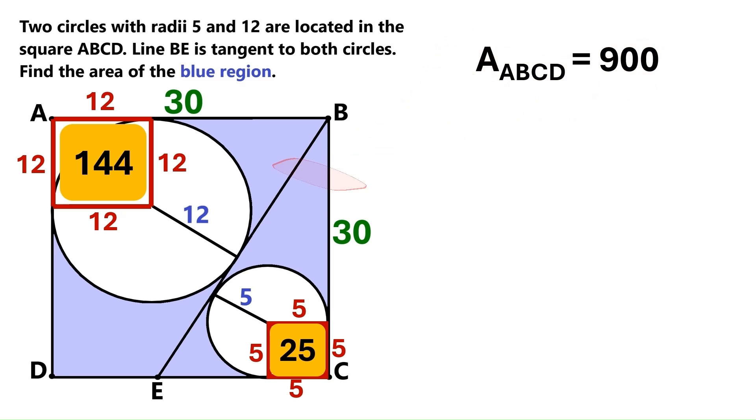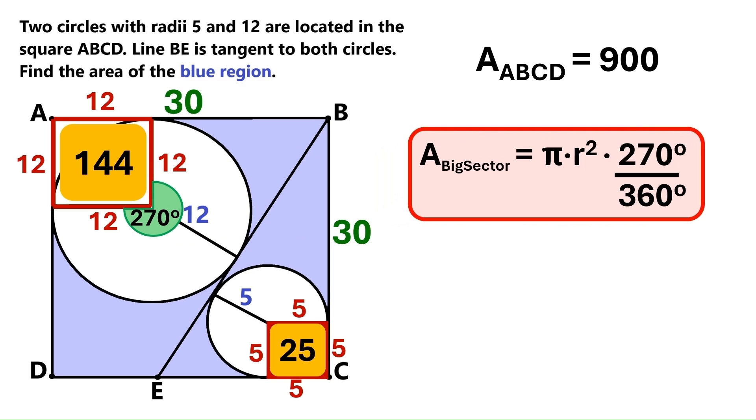Next, we need to find the area of this circular sector. And it's clear that its angle is 270 degrees. Because of the adjacent square. Now we can use this formula to find its area.